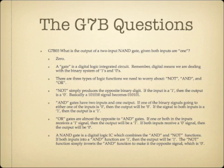OR is sort of the opposite of an AND gate. If one or both of the inputs receives a one signal, the output will be one. If both inputs receive a zero, the output will be zero. A NAND gate is a digital logic integrated circuit that combines the AND and NOT functions. If both inputs into an AND function are one, the output will be one. The NOT function then inverts it, making the output zero. Whatever the AND function would have produced, the NOT function inverts it to the opposite.